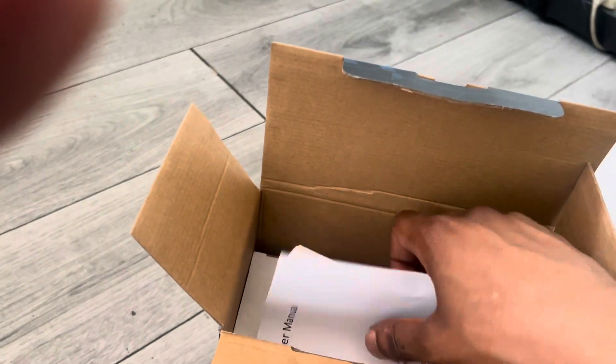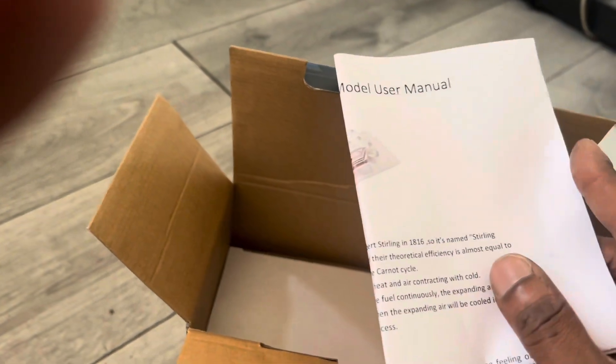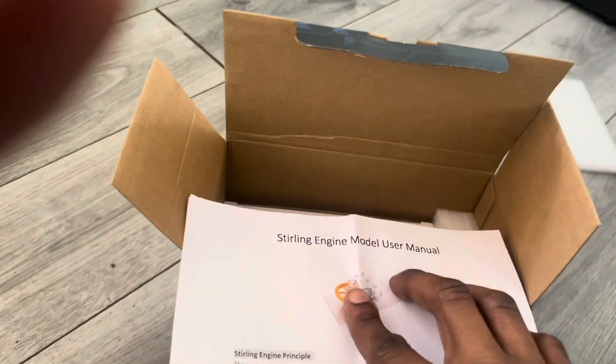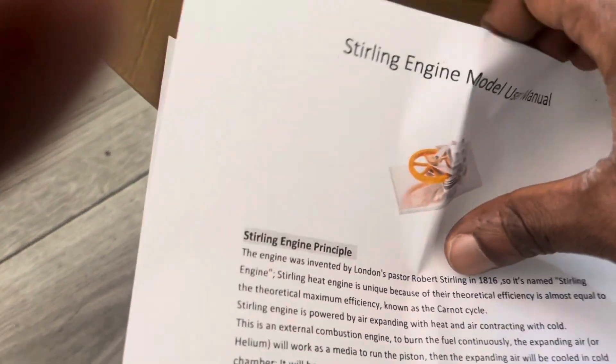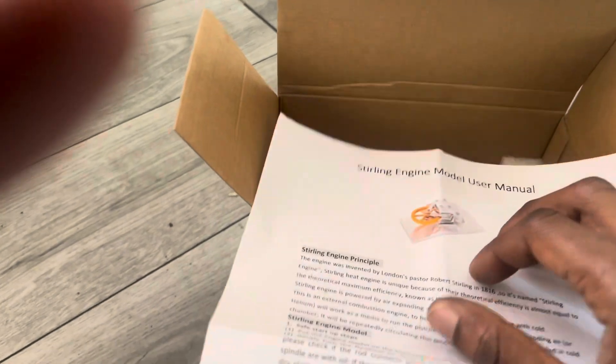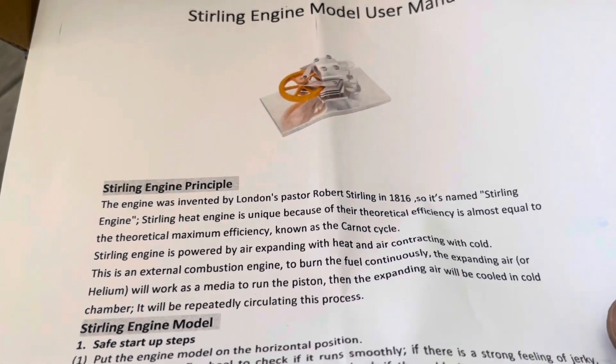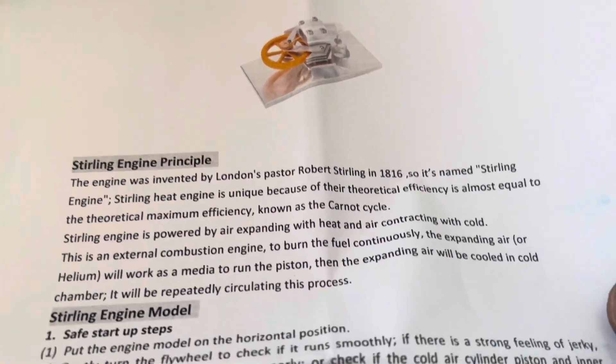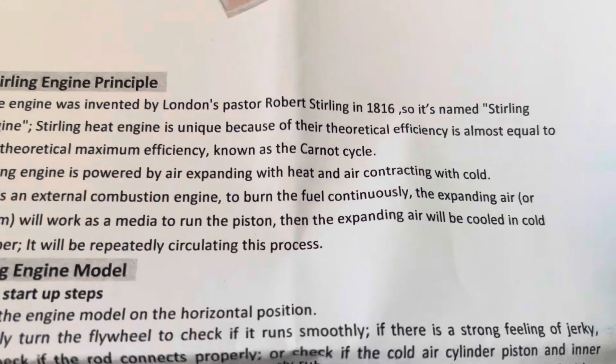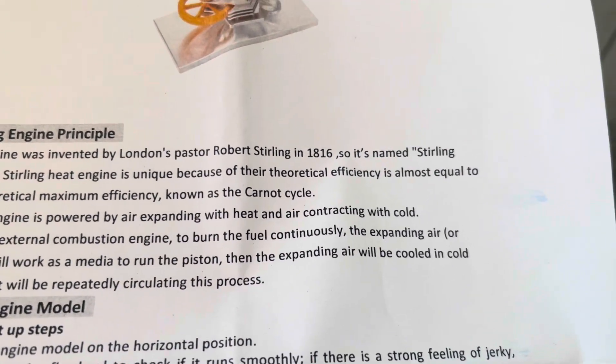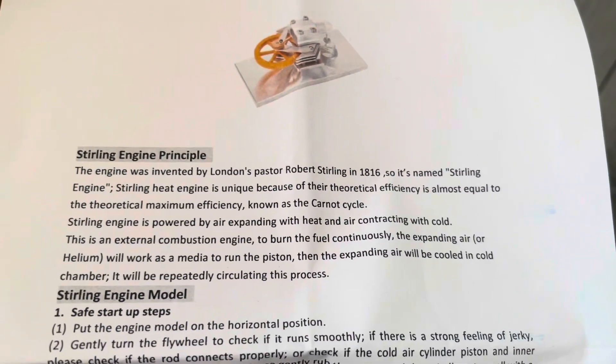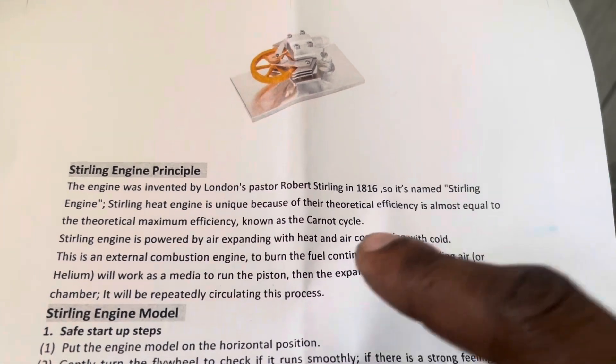And you are first greeted with a user manual. So this is the engine I've chosen, as you can see in the photograph. And here's the instruction menu. As you can see, it tells the story of the engine's history, which has been invented by Robert Stirling in 1816, so the engine has taken after the inventor's name.